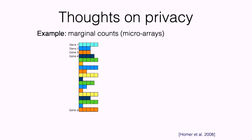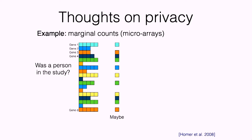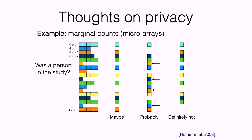Now suppose an insurance company comes and says, I wonder if Jim or John was in this data set of very healthy people. We know that everybody in the study had this last gene. Well, if these were my genes, maybe I was in the study. If these were my genes, probably I was in the study. If these were my genes, I was definitely not in the study because I don't have this last gene expressed.